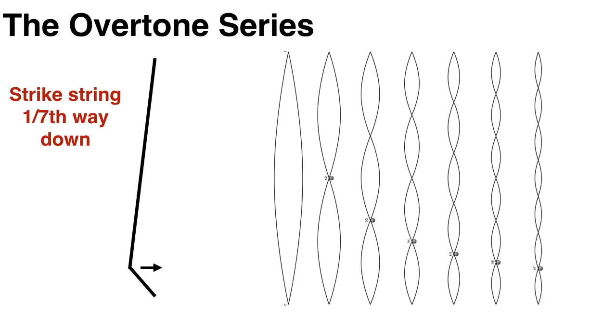And so plucking the string one seventh of the way down will create a nice balance of both high and low overtones. And as you may have guessed, this has the added benefit of eliminating the seventh harmonic, because this is exactly where one of the nodes of the seventh harmonic should be.